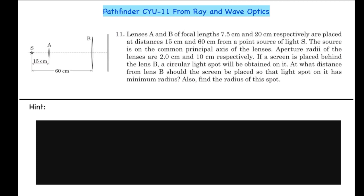Lenses A and B of focal lengths 7.5 cm and 20 cm respectively are placed at distances of 15 cm and 60 cm from a point source of light S. The source is on the common principal axis of the lenses. Aperture radii of these lenses are 2 cm and 10 cm respectively. If a screen is placed behind lens B, a circular light spot will be obtained on it. At what distance from lens B should the screen be placed so that the light spot has minimum radius? Also find the radius of this spot.